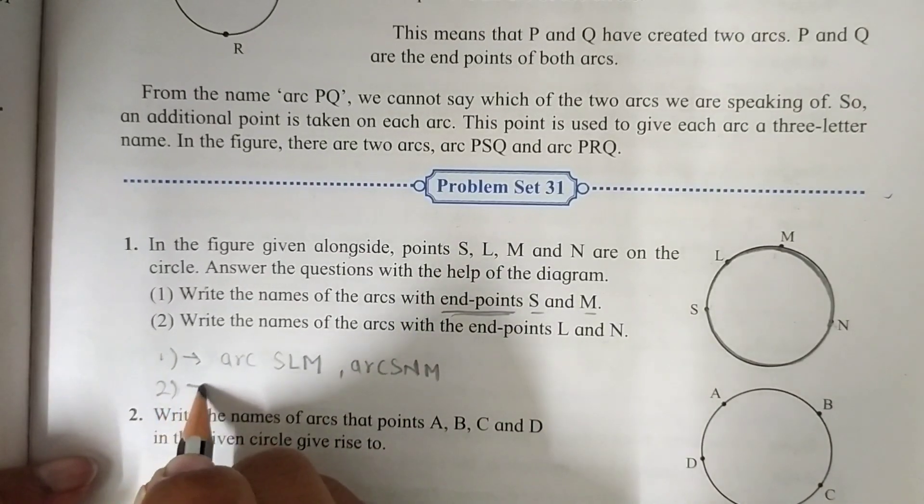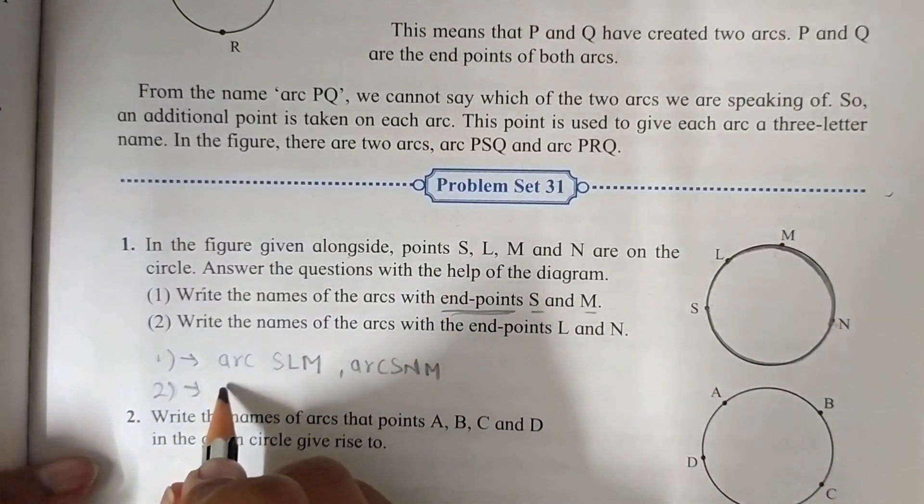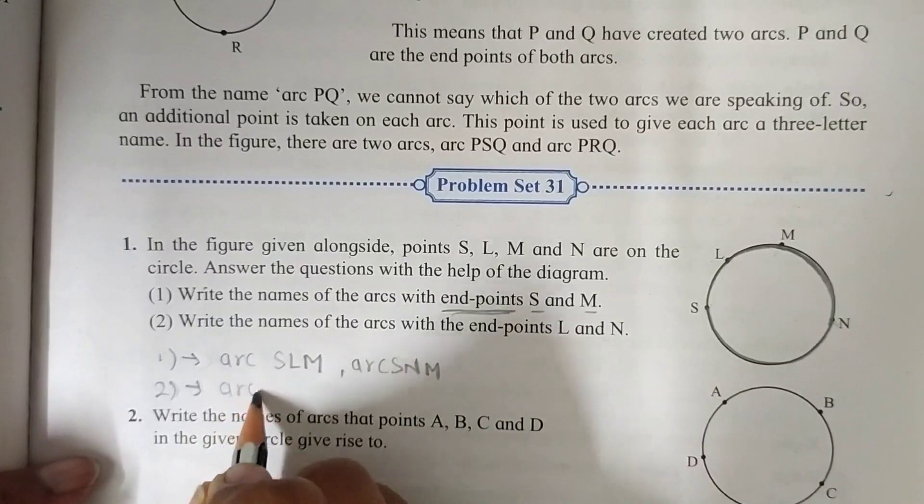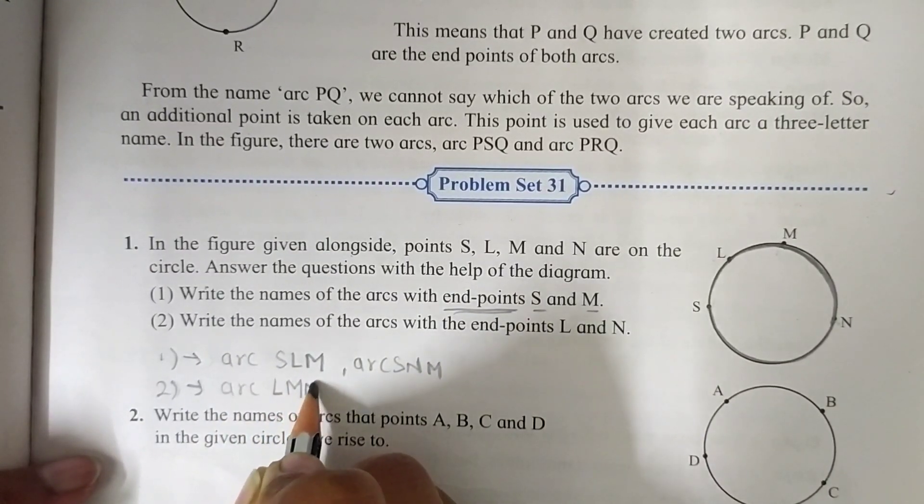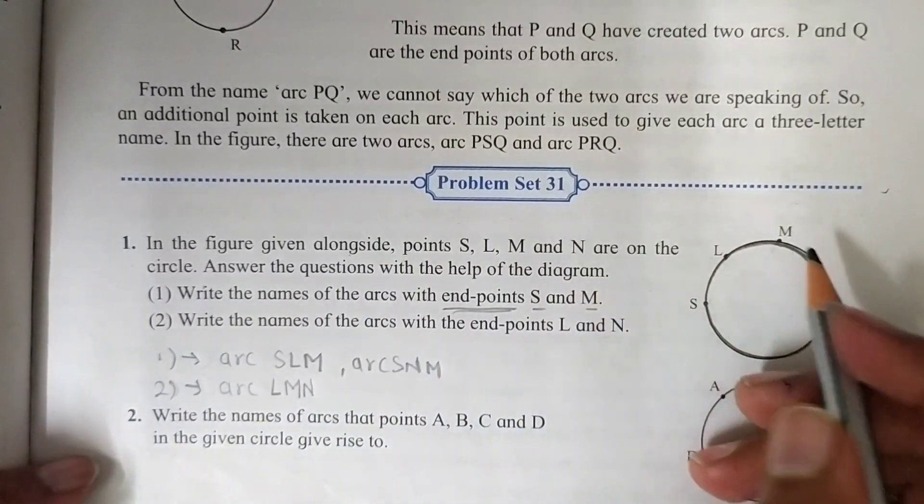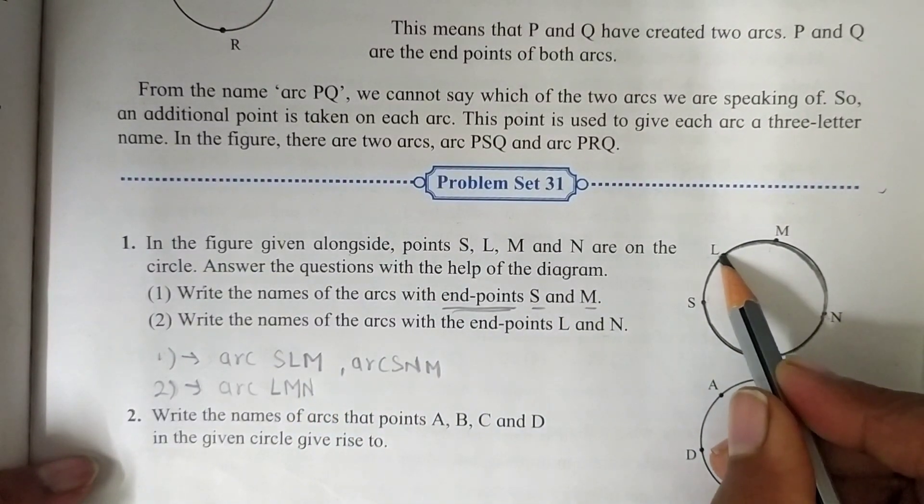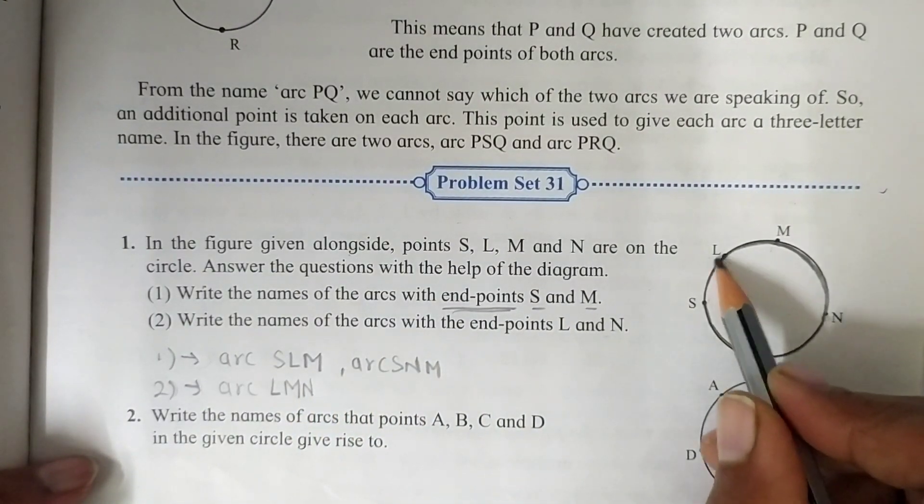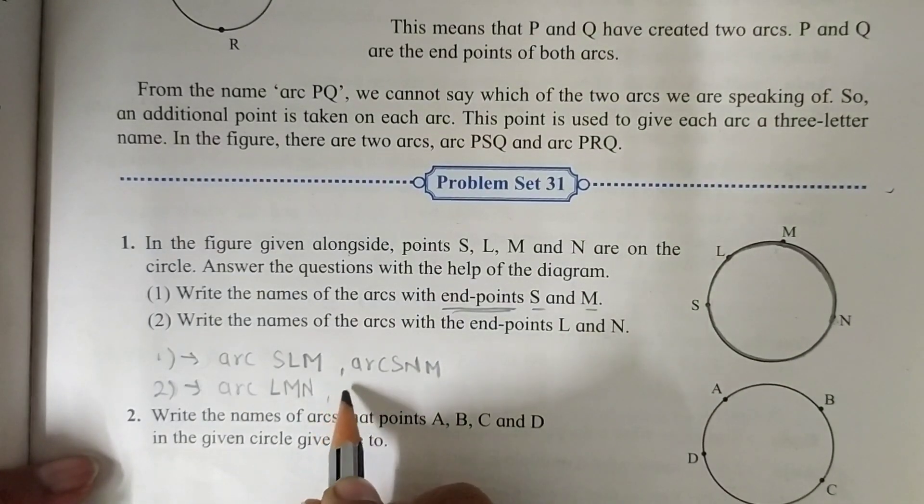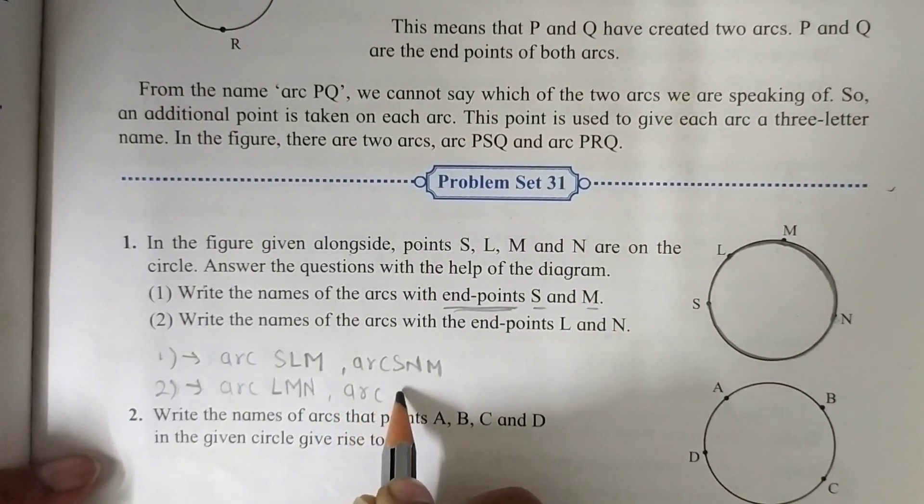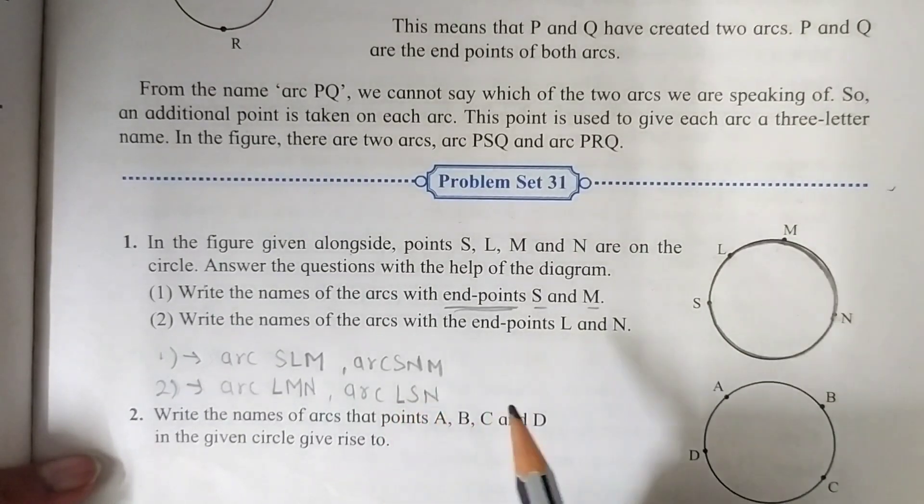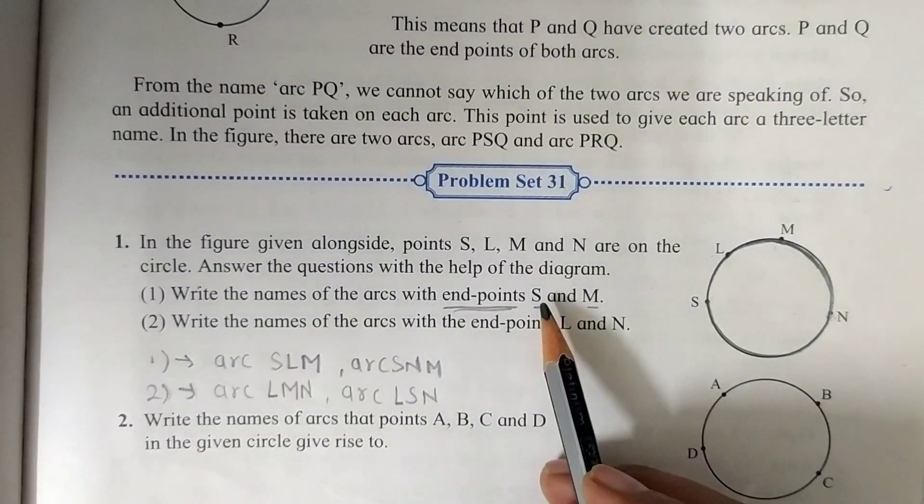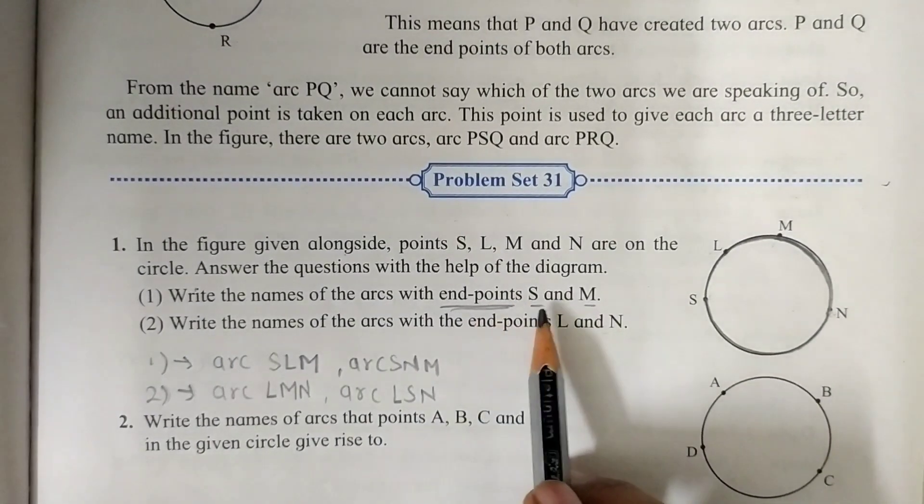The answer for our second question is arc L, M and N. And the second arc is L, S and N. This one arc L, S and N. It's so easy. You just have to take care of your end points.